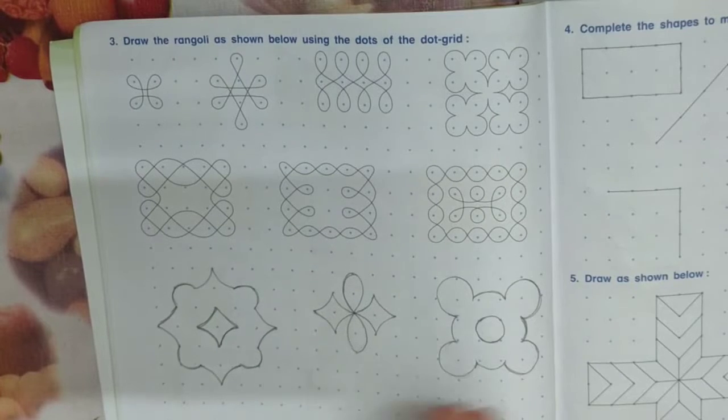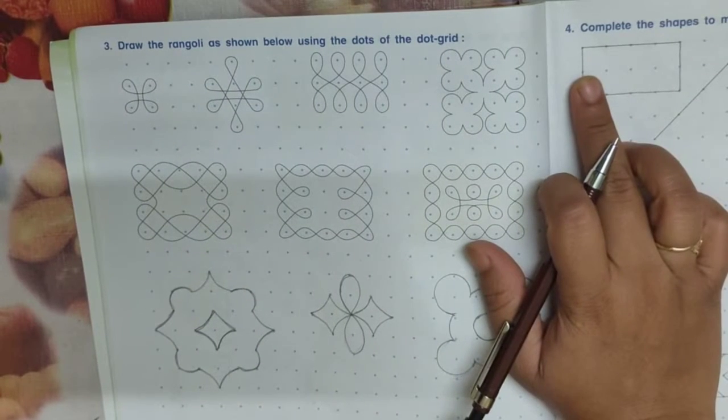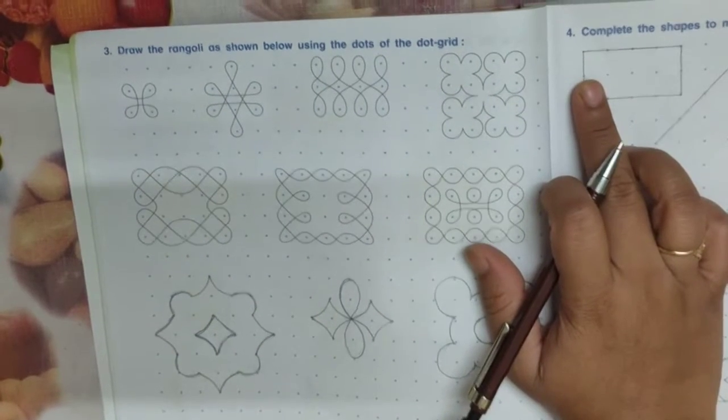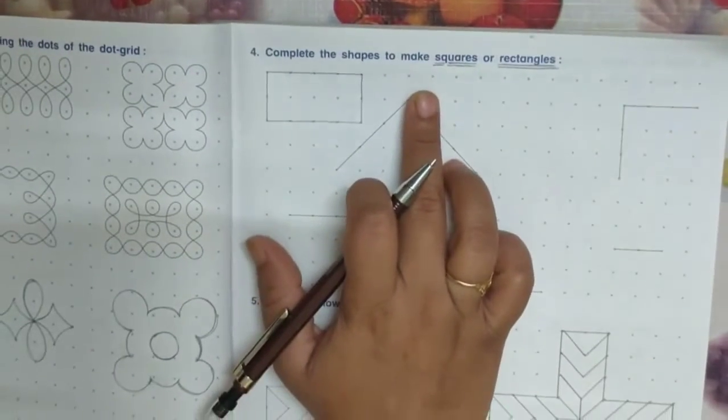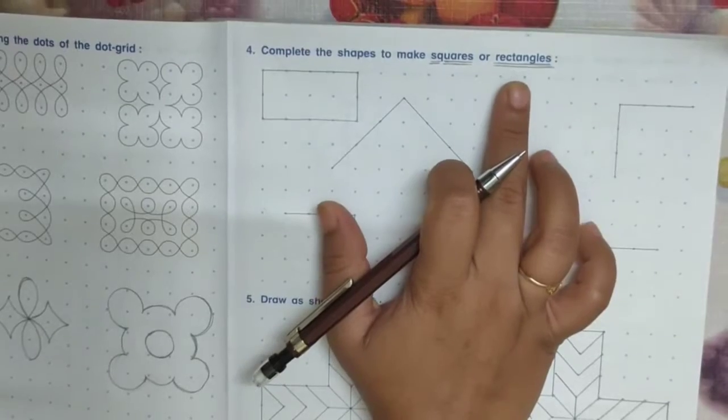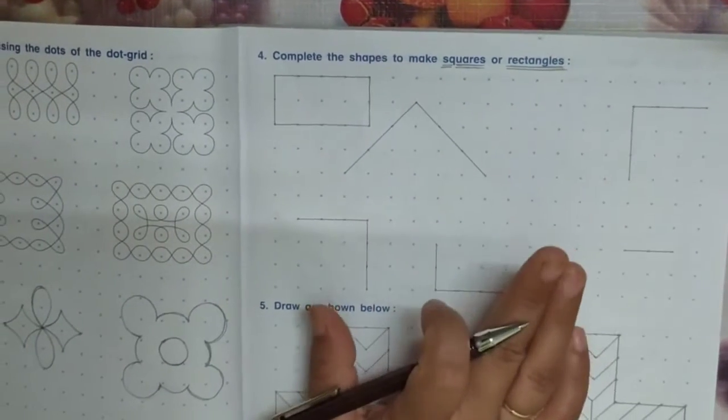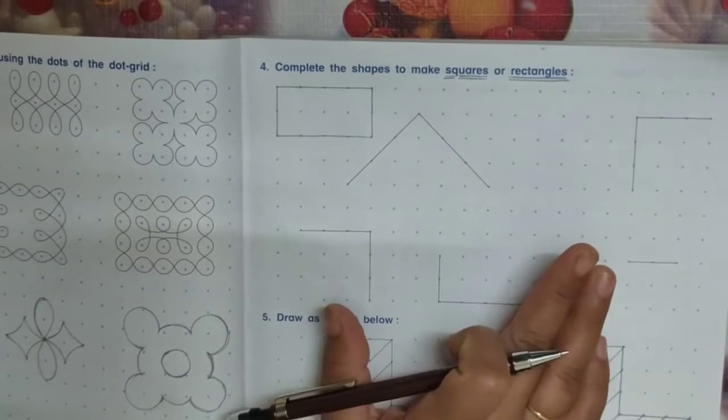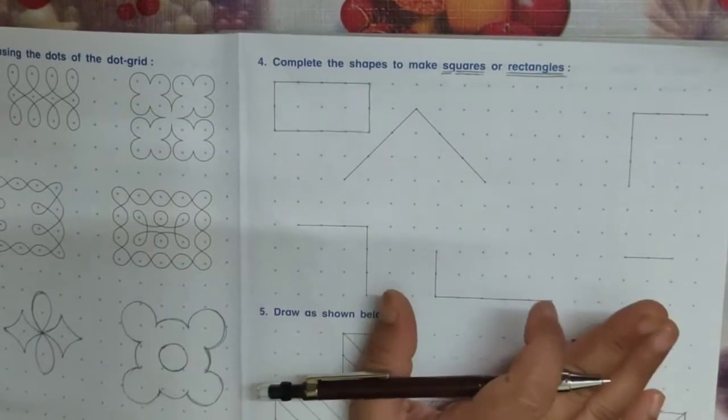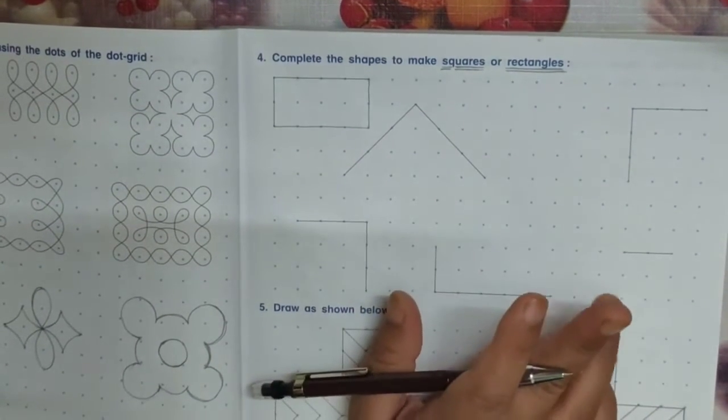Now see another question number 4: complete the shapes to make squares or rectangles. See here, you have to make square or a rectangle. Two shapes you have to make.